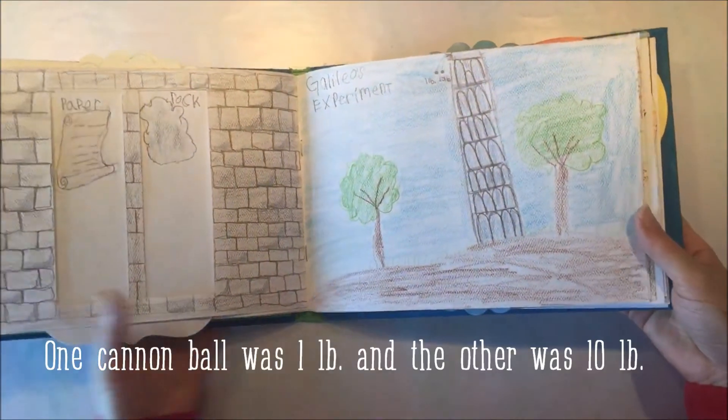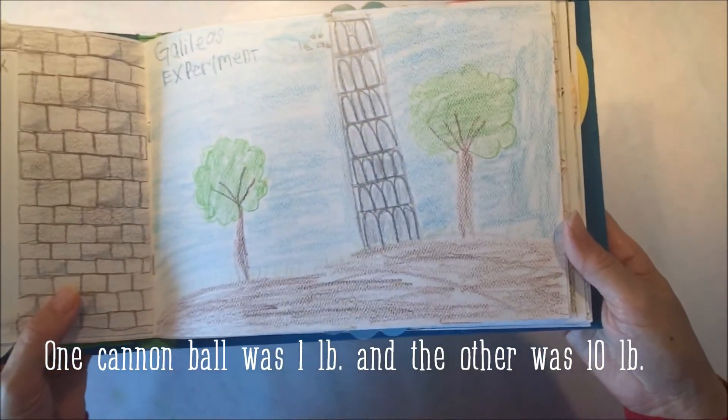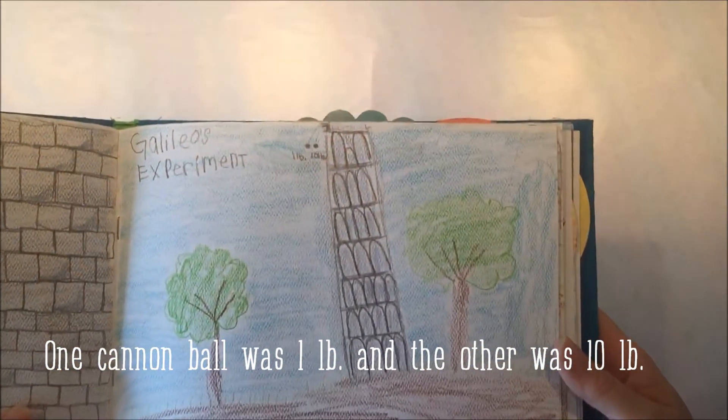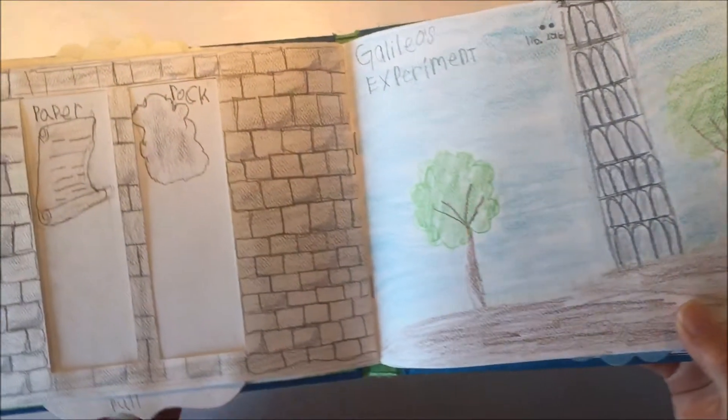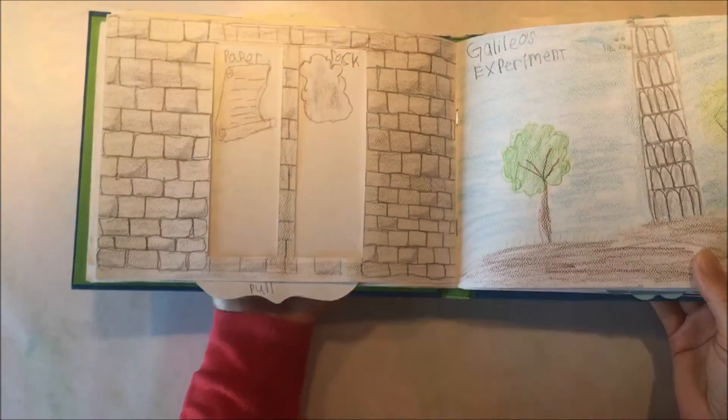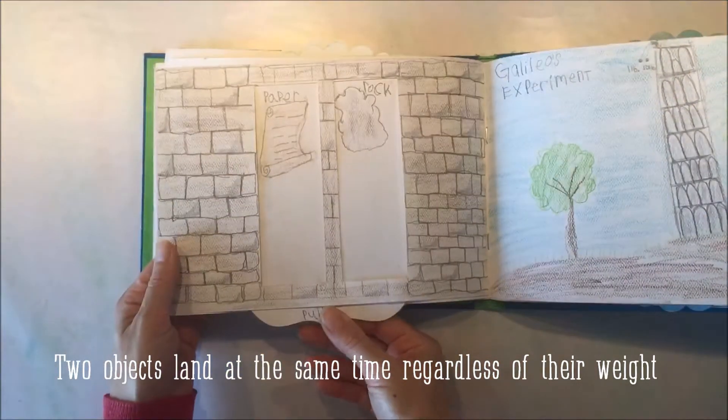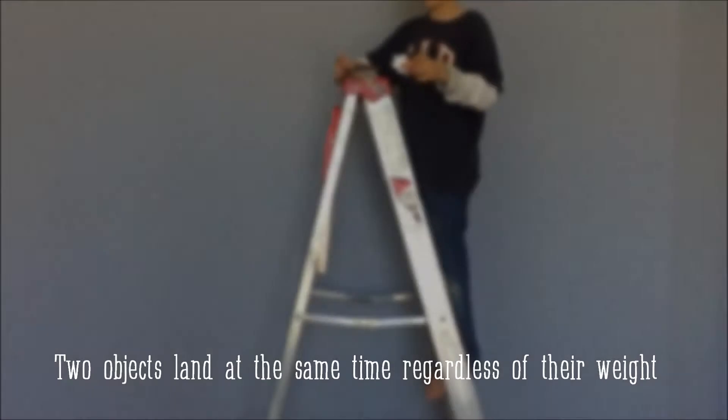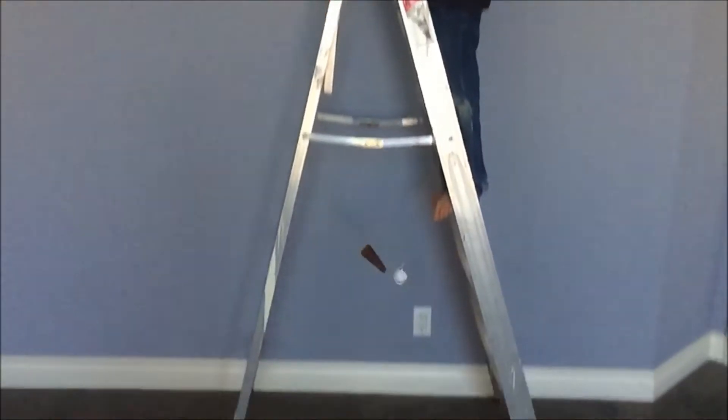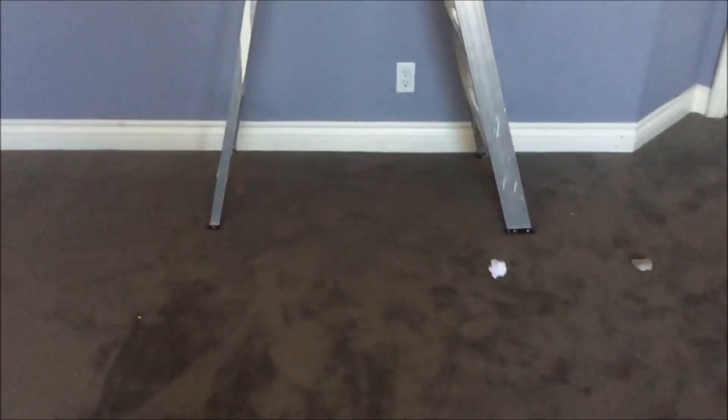We also went and did the other experiment that Galileo did when he dropped two cannonballs from the leaning tower of Pisa. And they both landed at the same time. And so we have our own interactive element in the book. And we also performed the experiment and sure enough, they do land at the same time, which was a great thrill for the kids to see.